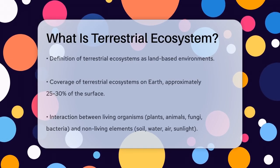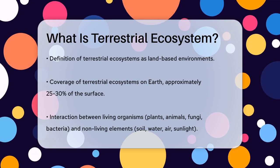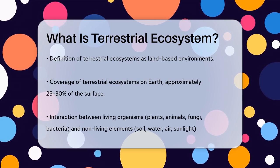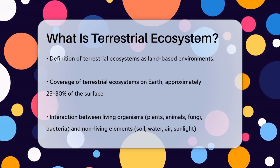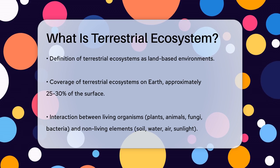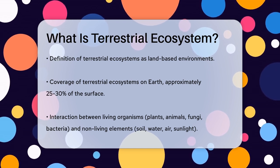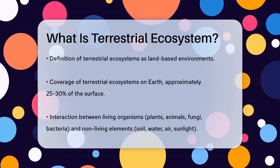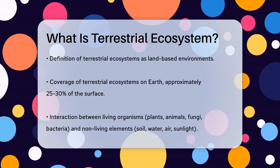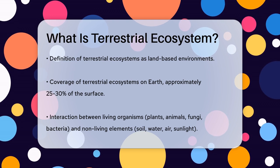What is a terrestrial ecosystem? If you've ever wondered what makes up the environments on our planet, you're about to discover a fascinating world. A terrestrial ecosystem is essentially any ecosystem that exists on land, including everything from tiny microorganisms in the soil to massive trees in forests and all the animals that live among them. These ecosystems cover about 25 to 30 percent of the earth's surface, roughly 140 to 150 million square kilometers.